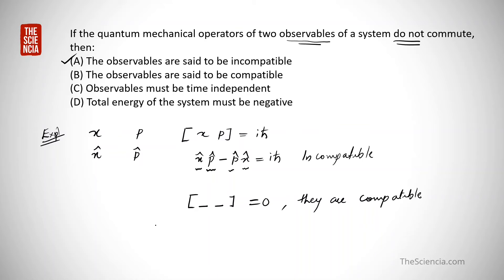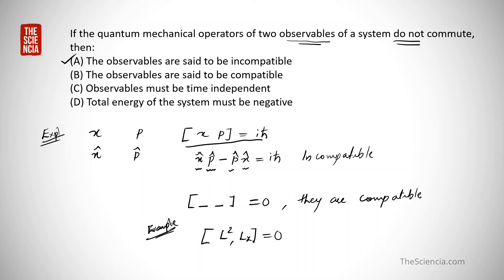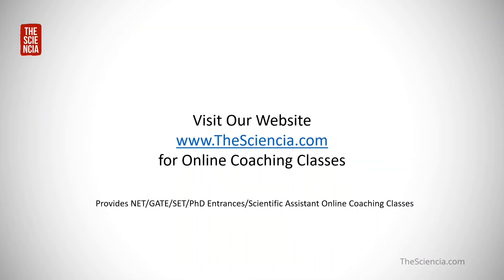An example of compatible observables: L-squared and L-z, where the commutator [L², Lz] equals zero. If the commutator [X, Px] gives i times h-cross, those observables are incompatible. If the commutator of two operators is zero, the observables are compatible.